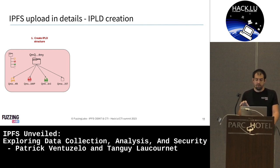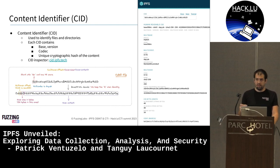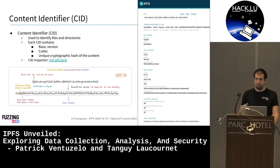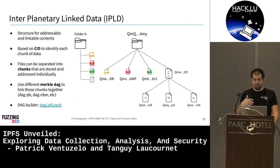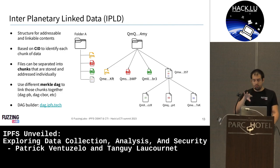In detail, what happens first is IPLD creation. You have a folder with different files and create a structure out of it. The main goal is to create a content identifier — a unique ID specific to the file. Inside this ID, there are multiple components: a base, a version, a codec, and then the cryptographic hash of the content, which is really important. Each file gets a CID, the folder gets a CID, and if a file is too big, it's split into multiple chunks each with their own CID. The whole structure is a Merkle DAG.